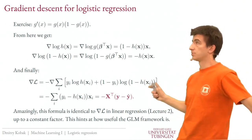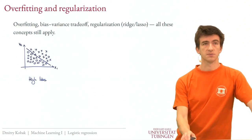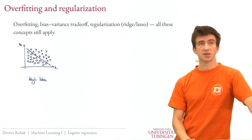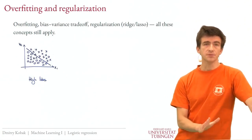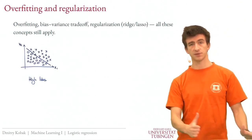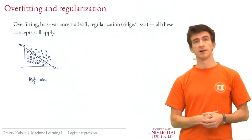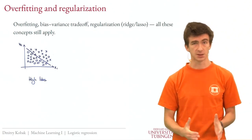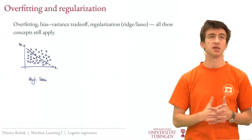So we're done setting up logistic regression. We have the loss function, we know how to compute the gradient, we can obtain a solution. Now let's discuss the properties: can we overfit?